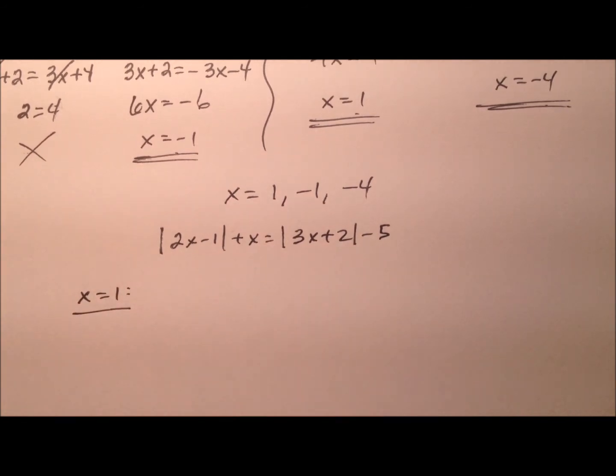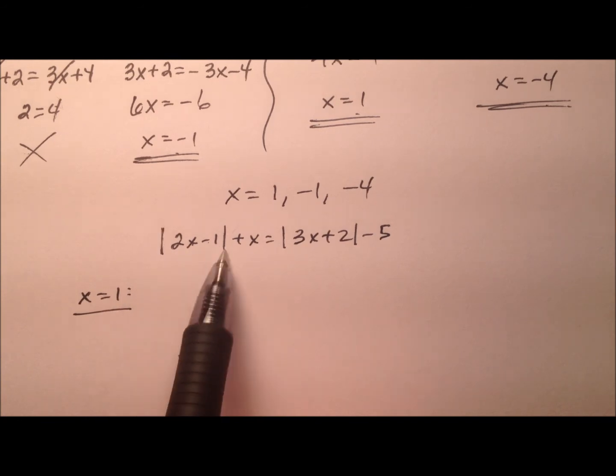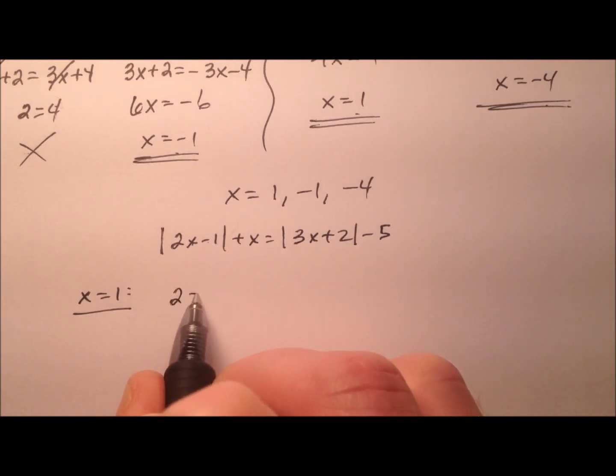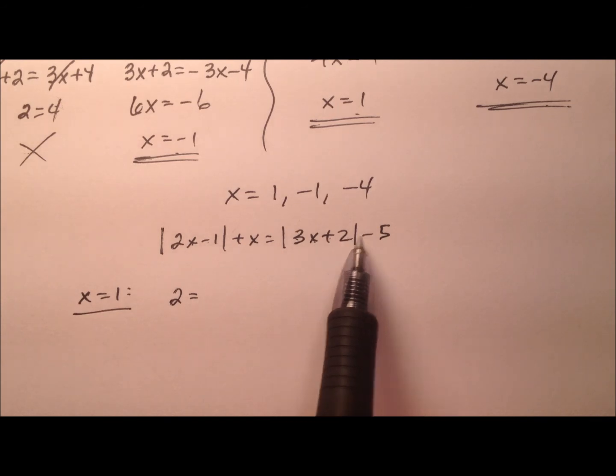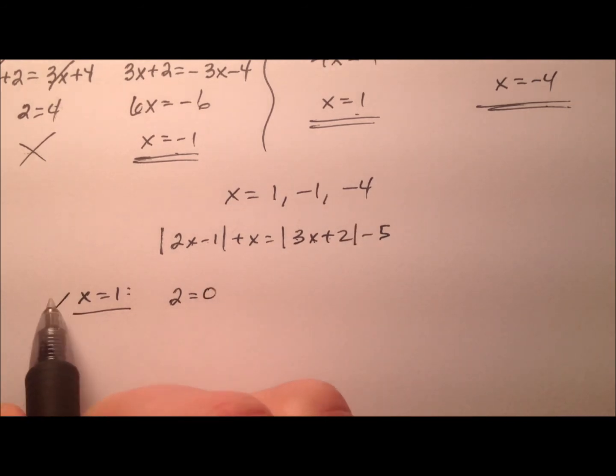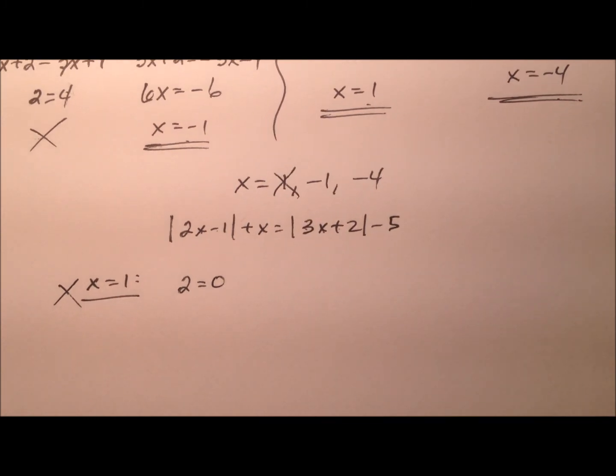So let's start with x equals 1. 2 times 1 is 2 minus 1 is 1. So the absolute value and 1 plus 1 is 2. 3 times 1 is 3 plus 2 is 5. 5 minus 5 is 5 is 0. So the x equals 1 will not work. That's going to be extraneous.